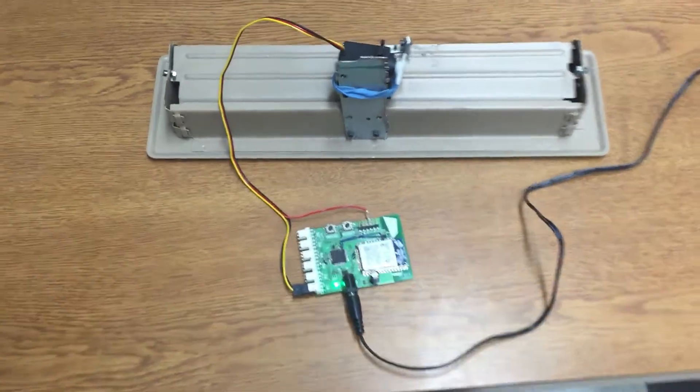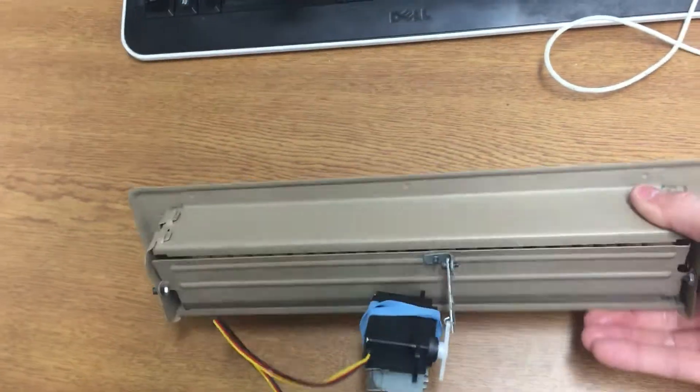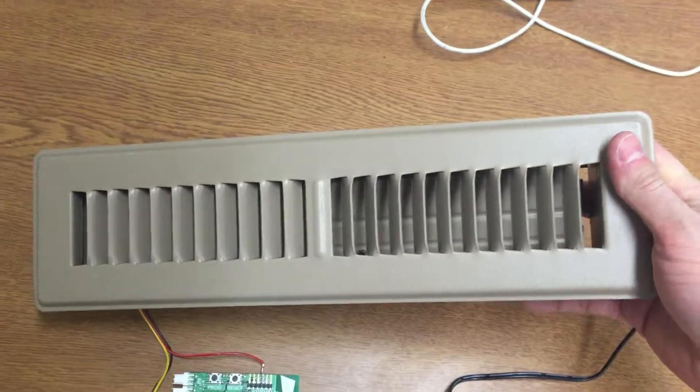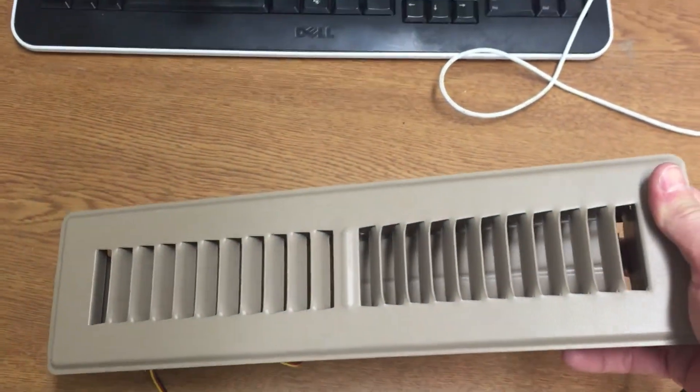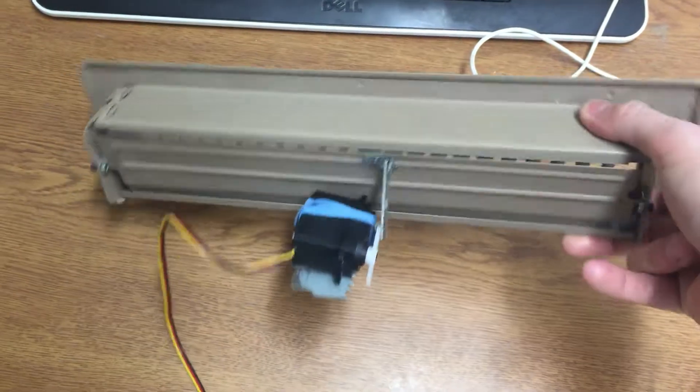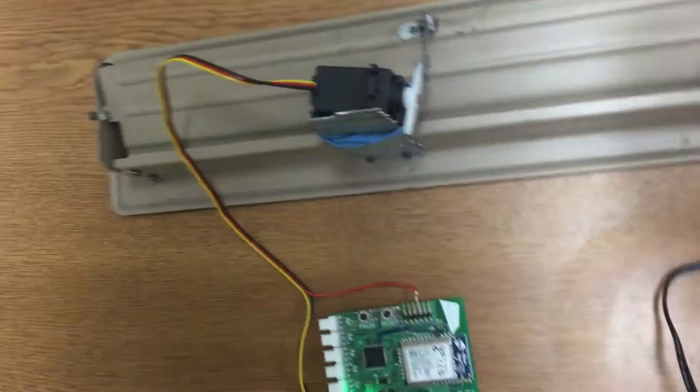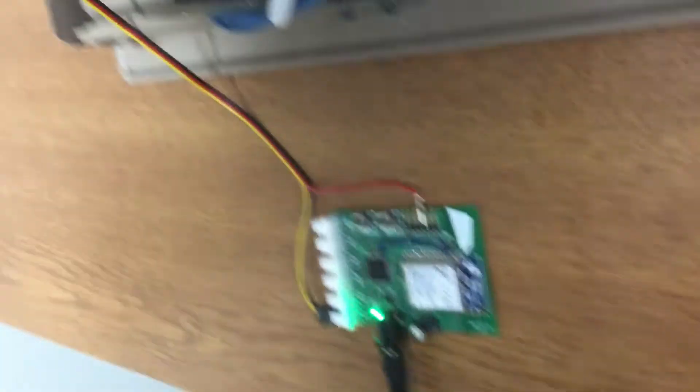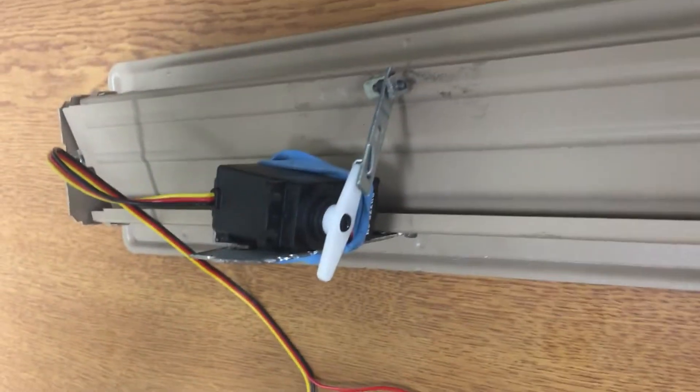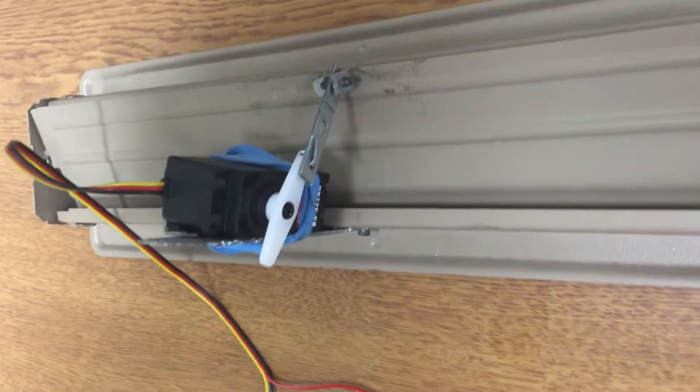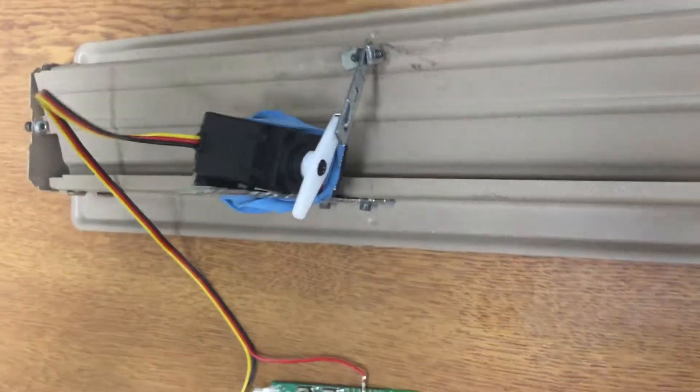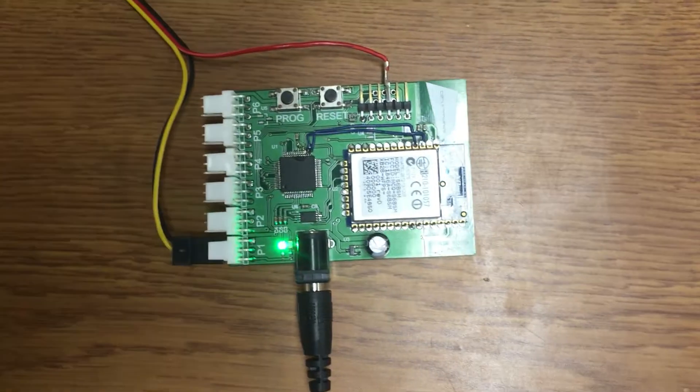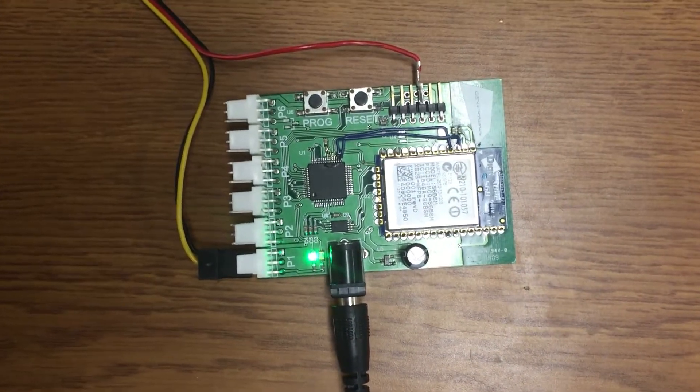So what I have here is a standard vent that you'd find in your house. What we've done is retrofitted it with a servo motor, and the servo can control the louver by means of a little arm. The servo is being controlled by this custom Wi-Fi board that we've developed here in Wisconsin.